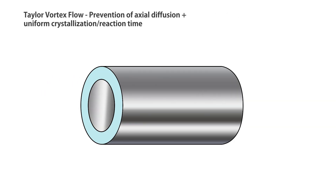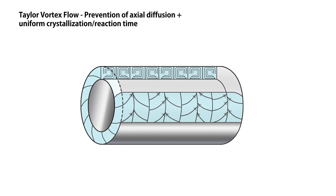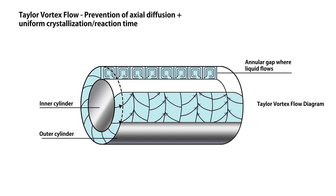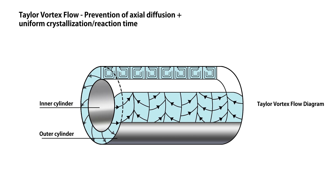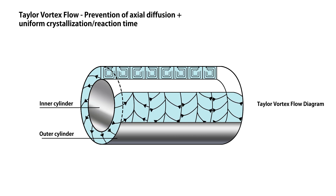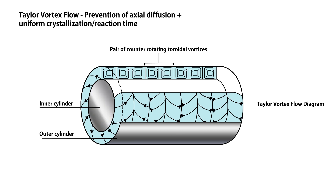When the annular gap between the outer and inner cylinder is filled with liquid and the inner cylinder is rotating, a vortex is generated as shown. A characteristic of Taylor Vortices is that clockwise and counterclockwise vortices appear alternately, and this is called a ring-pair vortex.